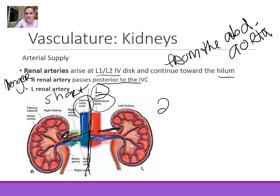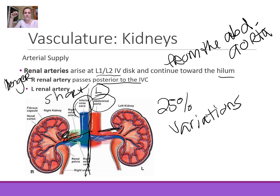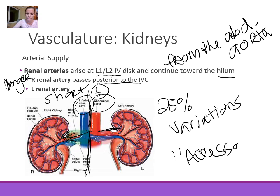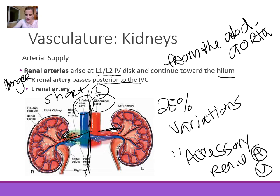About 25% of people have variations in either the number or position of the renal vessels. If someone has an additional vessel, this is referred to as an accessory renal artery or accessory renal vein. The variation doesn't have to be in number — it might just be a variation in the position of the vessel.